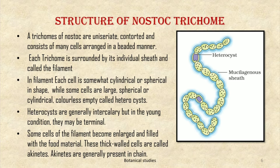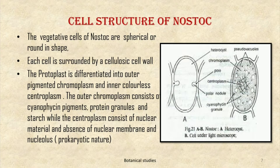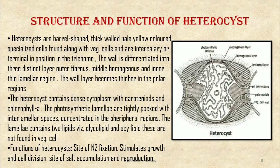The cell structure of Nostoc: the vegetative cells are spherical or round in shape. Each cell is surrounded by a cellulosic cell wall. The protoplast is differentiated into outer pigmented chromoplasm and inner colorless centroplasm. The outer chromoplasm consists of cyanophysin pigments, protein granules, and starch, while the centroplasm consists of nuclear material with absence of nuclear membrane and nucleolus — that is, Nostoc is prokaryotic in nature.